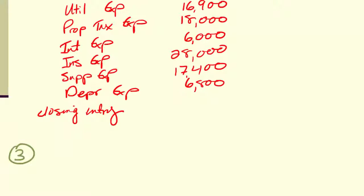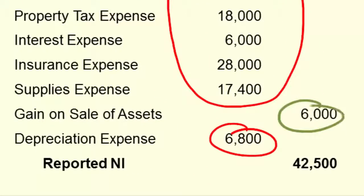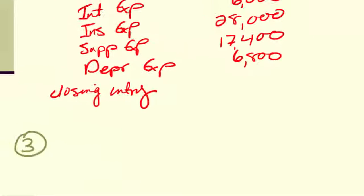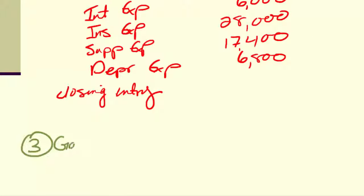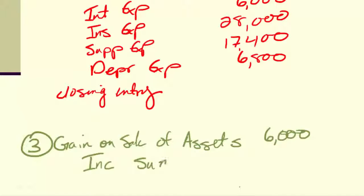Step three is to close my gains and my losses. I have one gain down here, $6,000. It had a credit balance since it's a gain, so I'm going to debit it so that it closes, and it was $6,000. I'll credit income summary. And this again is a closing entry.